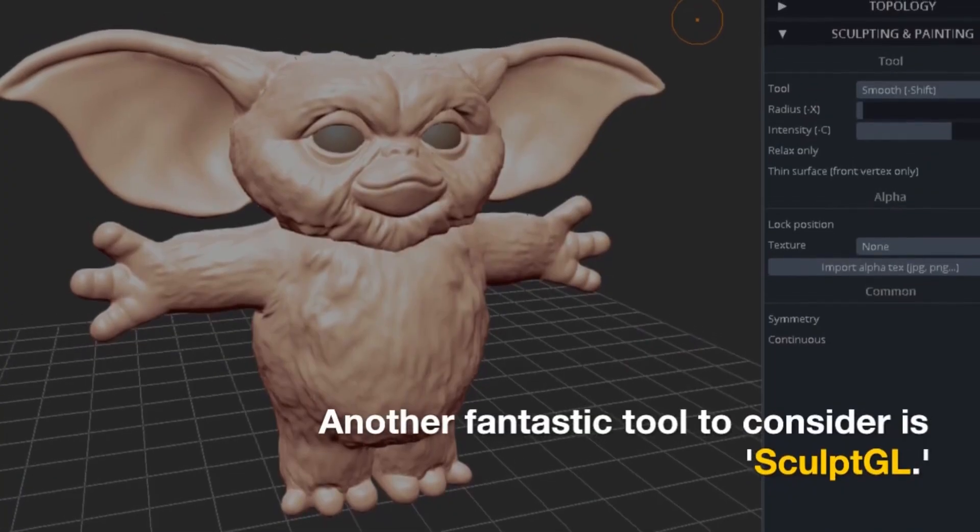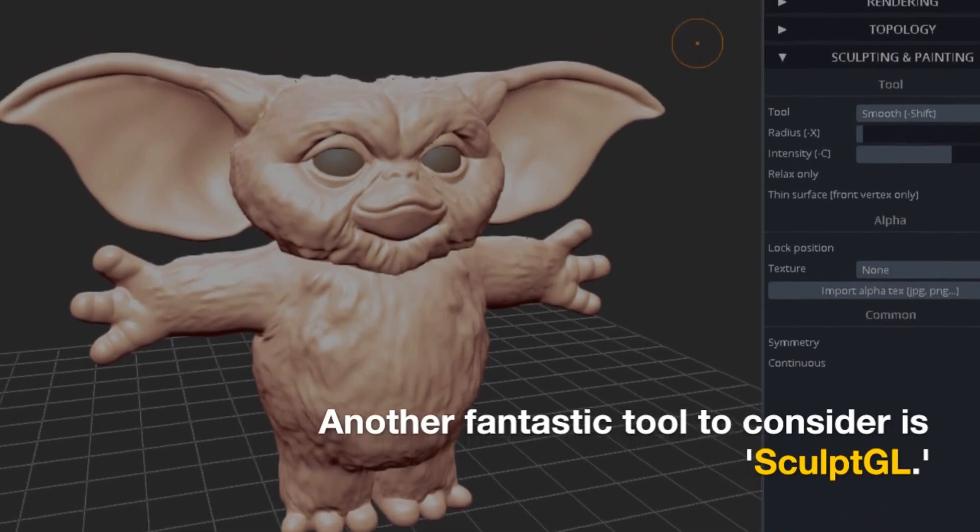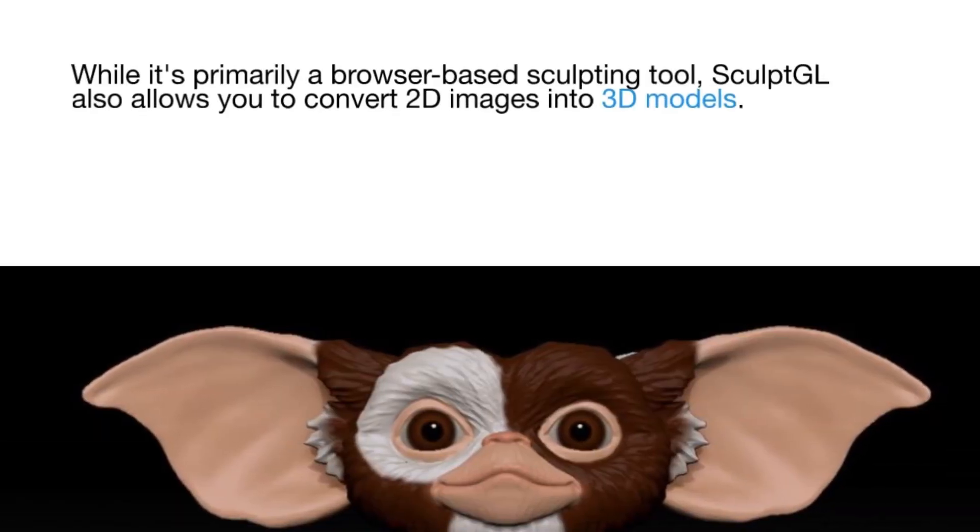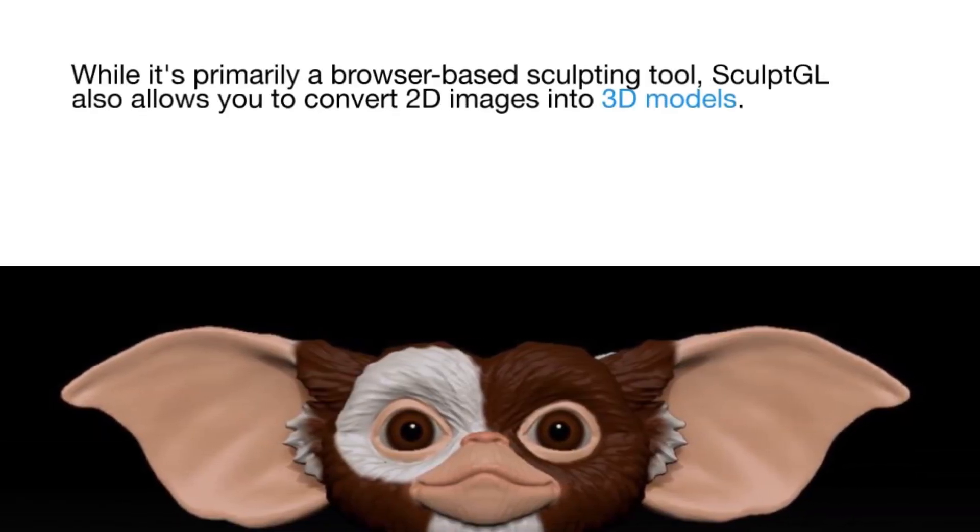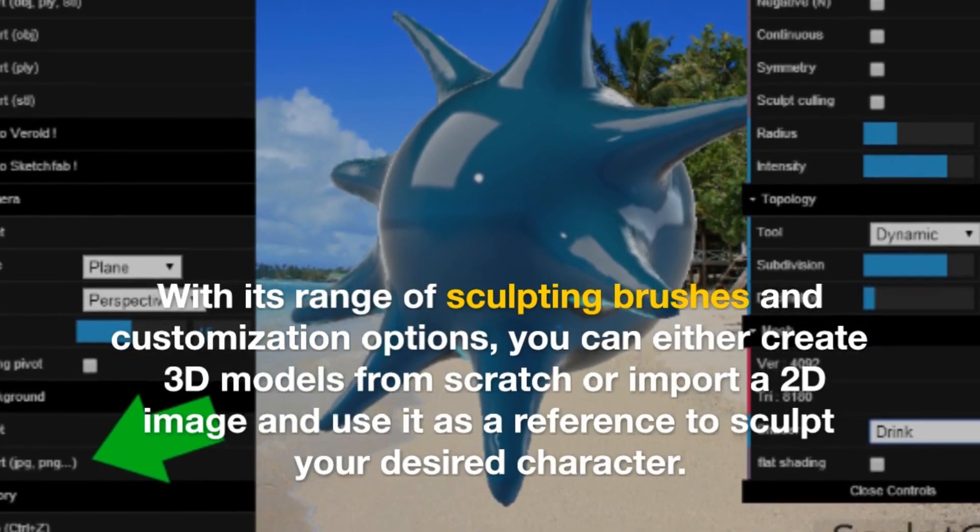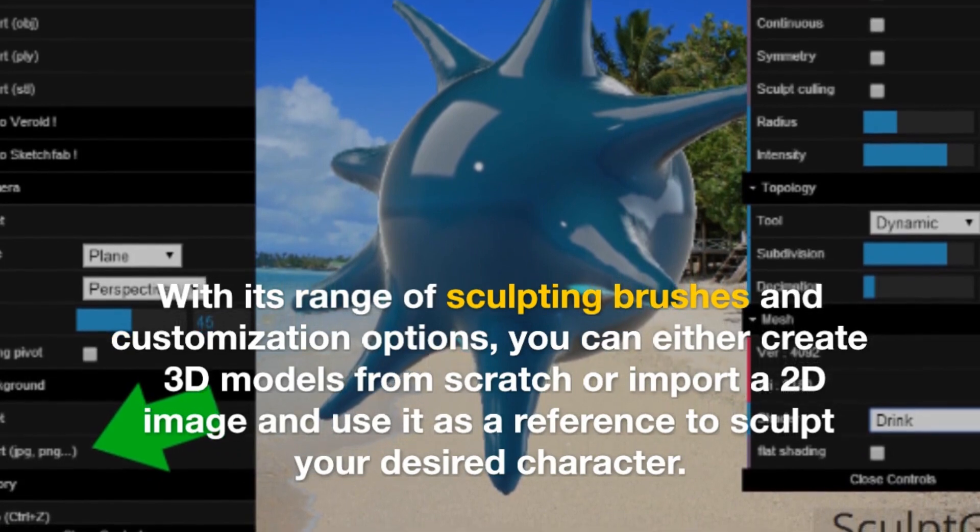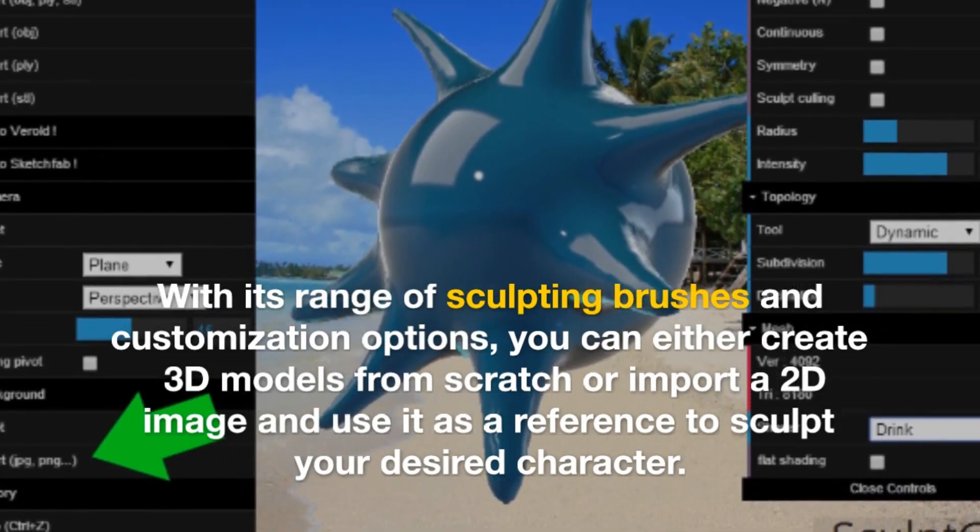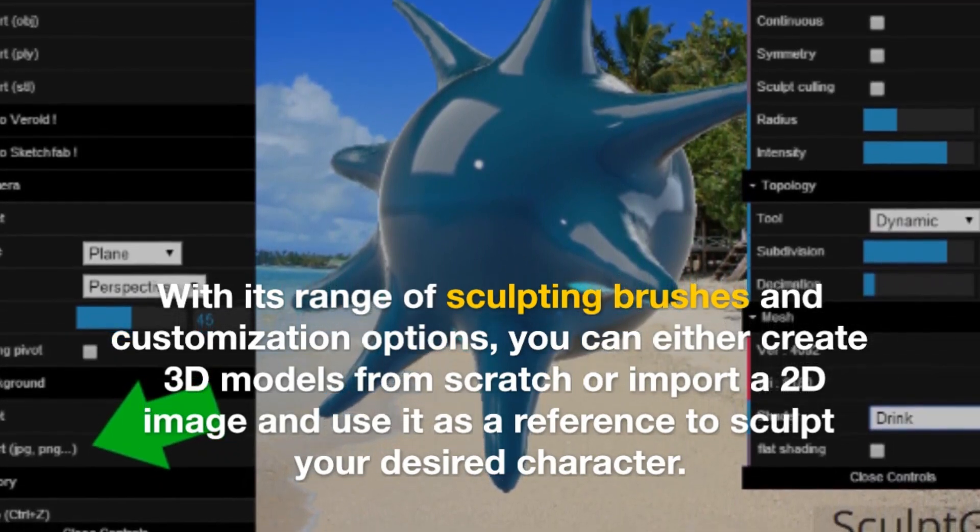Another fantastic tool to consider is SculptGL. While it's primarily a browser-based sculpting tool, SculptGL also allows you to convert 2D images into 3D models. With its range of sculpting brushes and customization options, you can either create 3D models from scratch or import a 2D image and use it as a reference to sculpt your desired character.